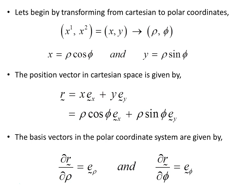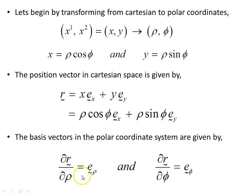Let's begin by transforming from Cartesian to polar coordinates. We'll label our coordinates x1, x2, where x is given by rho cos phi and y is rho sin phi. The position vector in Cartesian space is substituted into polar coordinates. The basis vectors in the polar coordinate system are given by partial derivatives: e_rho is the partial derivative of the position vector with respect to rho, and e_phi is the partial derivative of the position vector with respect to phi.